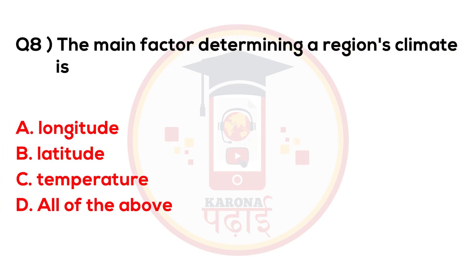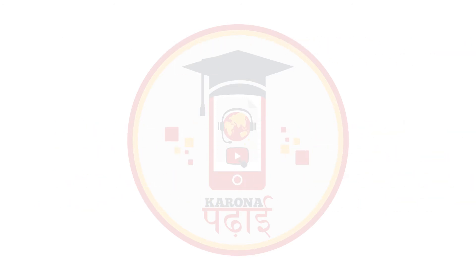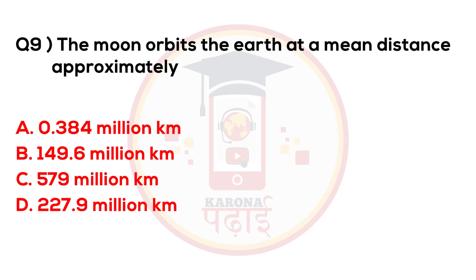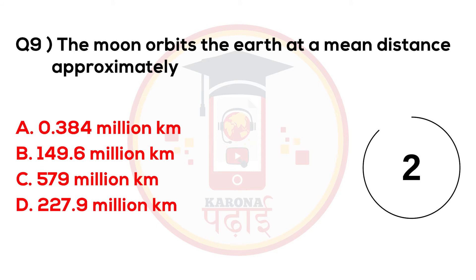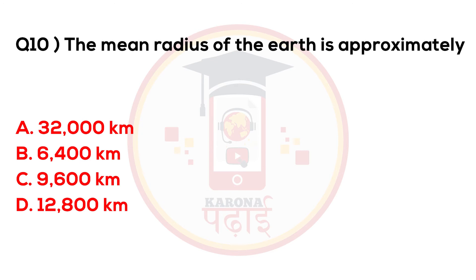The main factor determining a region's climate is latitude. The moon orbits the Earth at a mean distance of approximately 0.384 million km. The mean radius of the Earth is approximately 6,400 km.